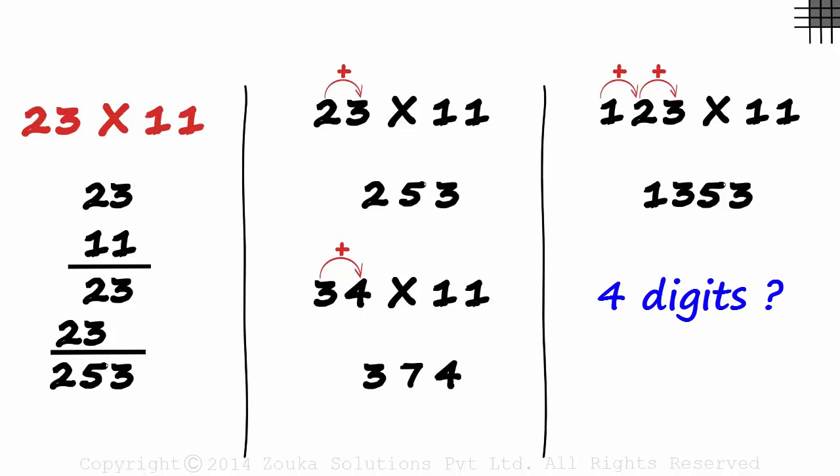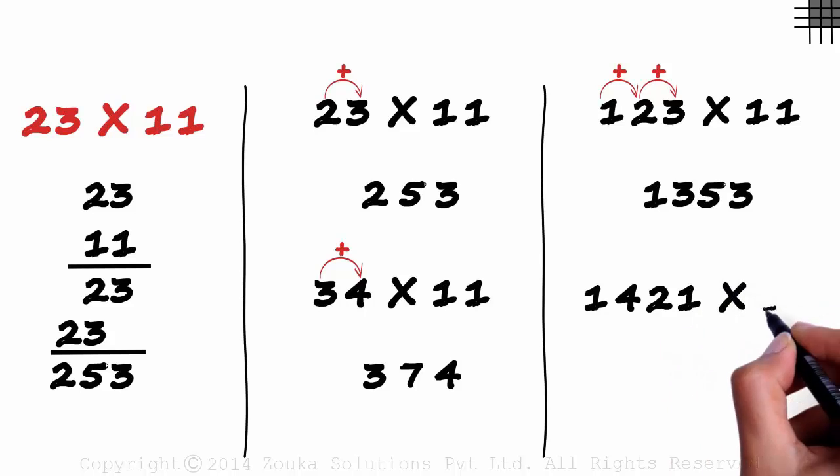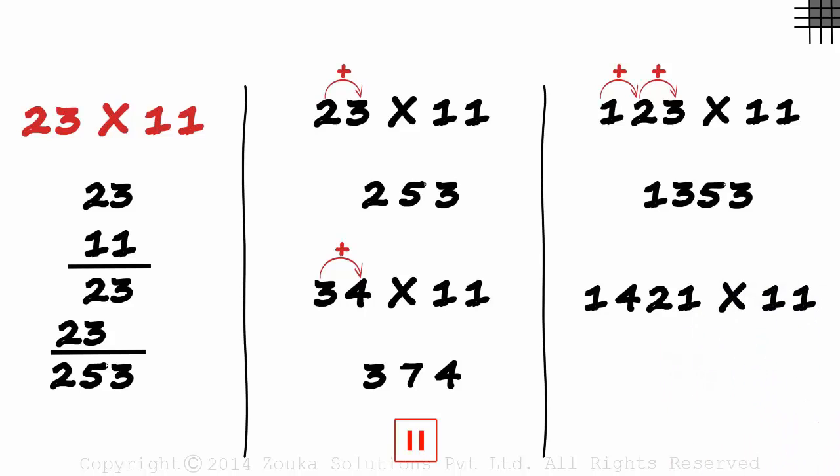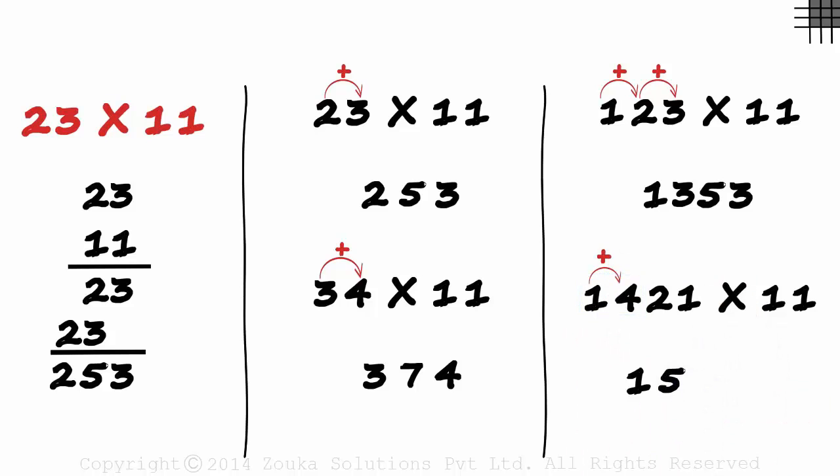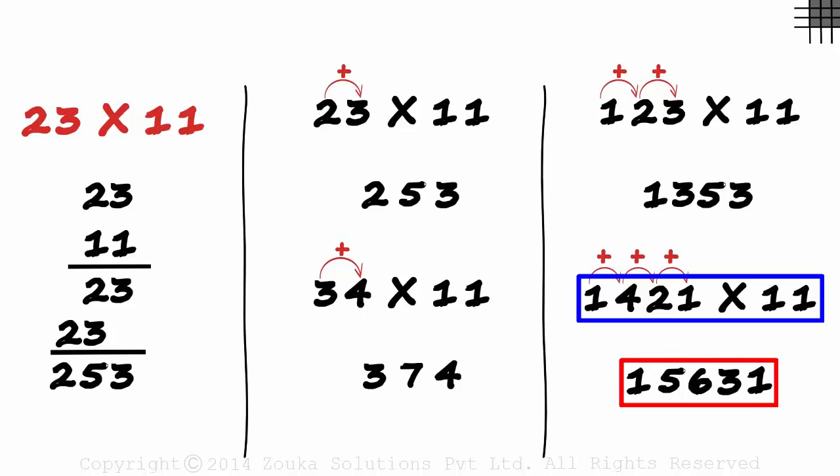Does it work with 4 digit numbers as well? Let me say this clearly: this trick works with any and every number. Try multiplying 1421 with 11 using the shortcut we just saw. The first digit 1 is written as is. Then the sum of these two numbers: 1 plus 4 is 5. Then the sum of these two numbers: 4 plus 2 is 6. We continue this until we reach the last digit. Sum of these two numbers will be 2 plus 1 which equals 3. And then the last digit 1 is written in the end. 1421 times 11 is equal to 15631.